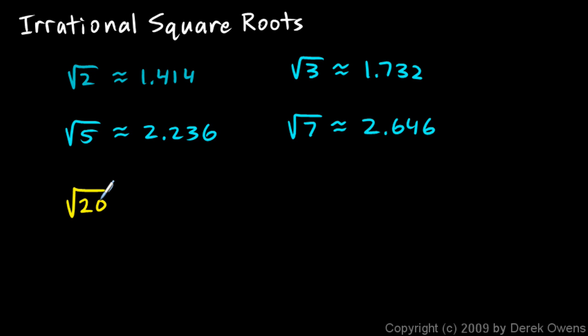We know that 20 is equal to 4 times 5. So I can say the square root of 20 is the square root of 4 times 5. Now I'm going to take this square root of 4 times 5 and break it up into two square roots. That will be the square root of 4 times the square root of 5. And the square root of 4, that's simply 2.